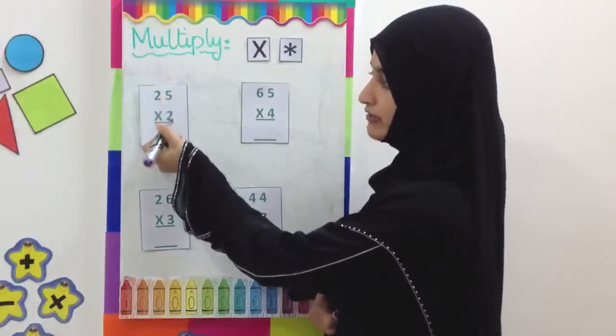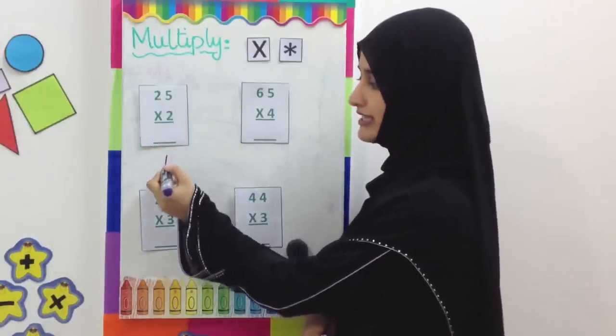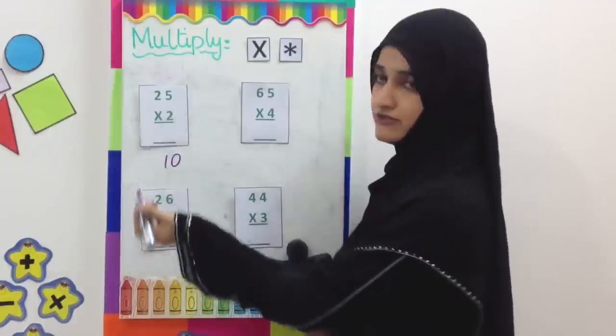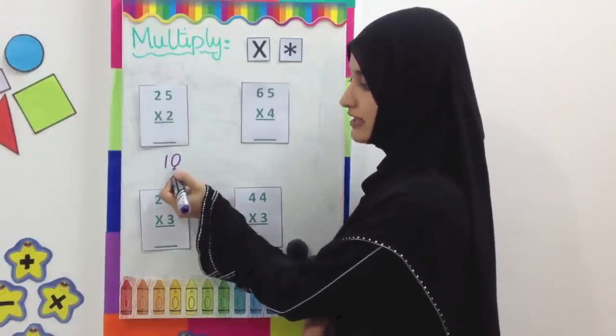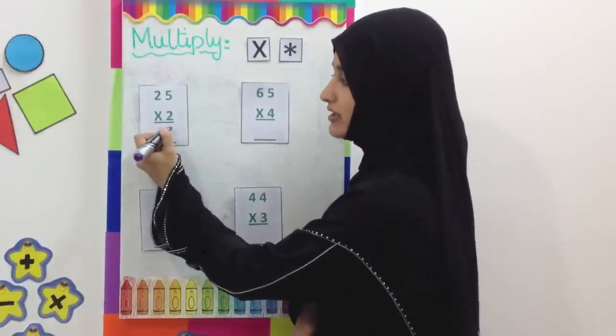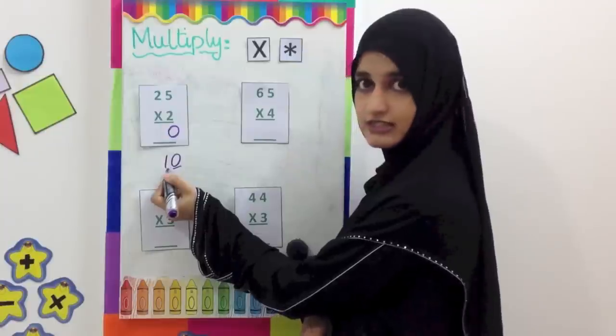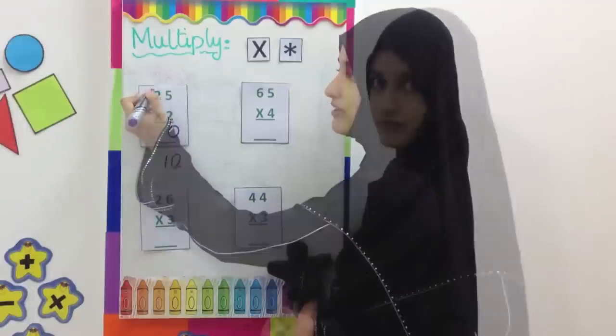Here we have 5 and 2. We are going to multiply them. 5 2's are 10, or we can say 2 5's are 10. This number 0 is in the units place, so we write it down here in the units place. This one is a 10, so we have to move it to the next column here.